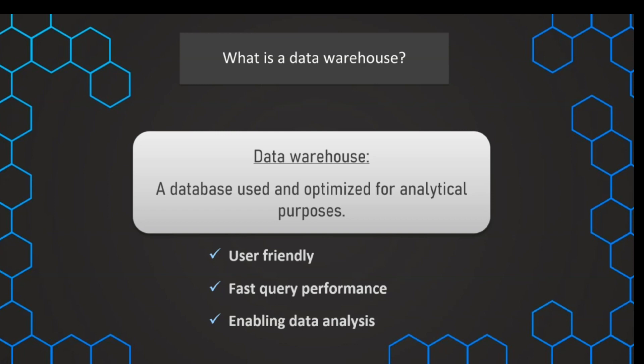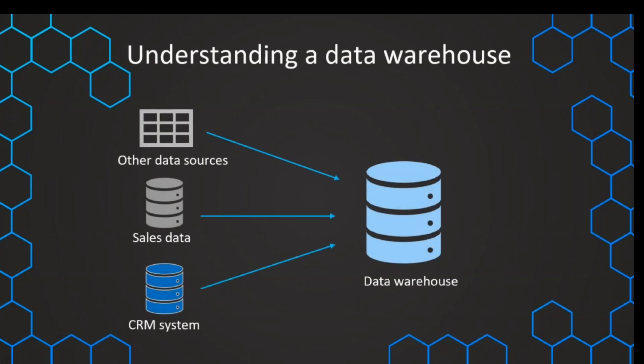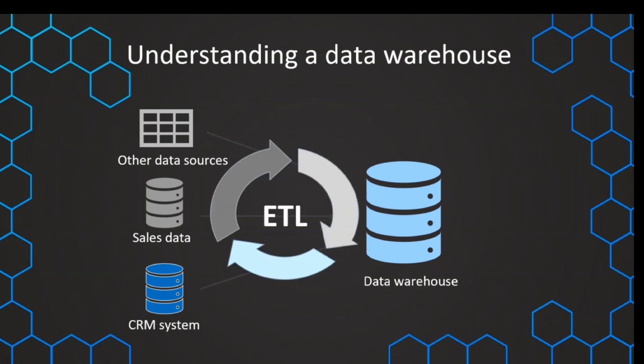To understand a data warehouse, we need to understand that we have two different systems. We have the operational data systems — these can be different data sources like sales data, our HR system, our CRM system — and all of these have different formats and data structures. What we need to do is bring all of that relevant data together and store it in a centralized location.